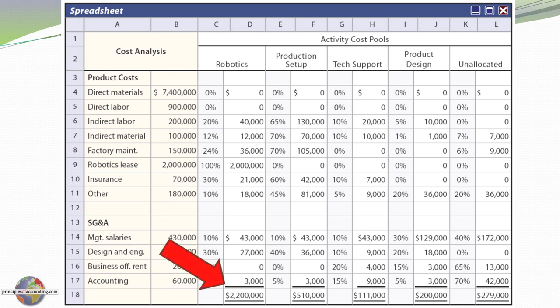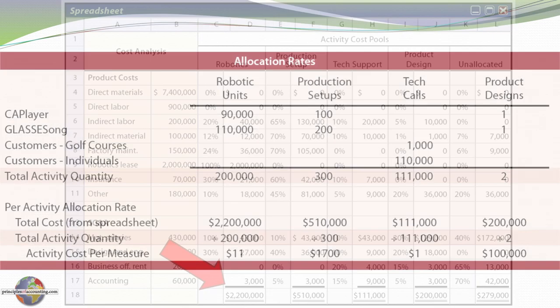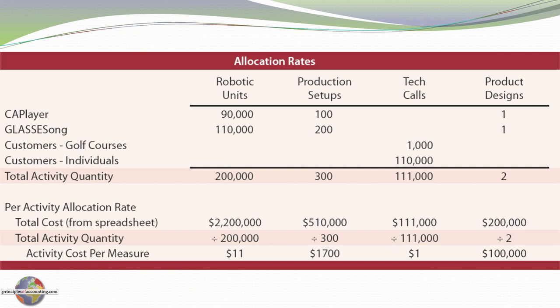After completing the tabulation, the robotics department is assigned a cost of $2,200,000. We then determine an allocation rate: with 200,000 units of activity, the activity cost rate is $11 per unit for robotics. Working through the full spreadsheet, production setup costs $1,700 per setup, tech support costs $1 per call, and product design costs $100,000 per product.